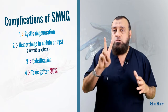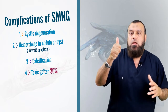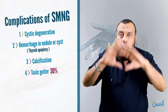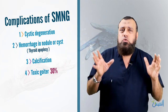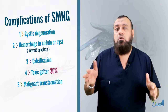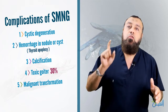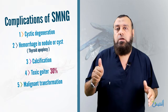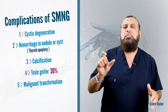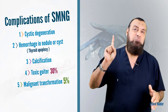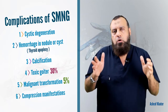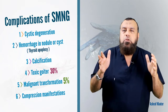Toxic changes occur in 30% of cases — secondary toxic changes. The source of toxicity may be either one autonomously active nodule, or a diffuse process from the internodular tissue, known as Plummer's disease. Malignant transformation occurs in only 5% of cases, and usually turns into follicular type thyroid cancer.